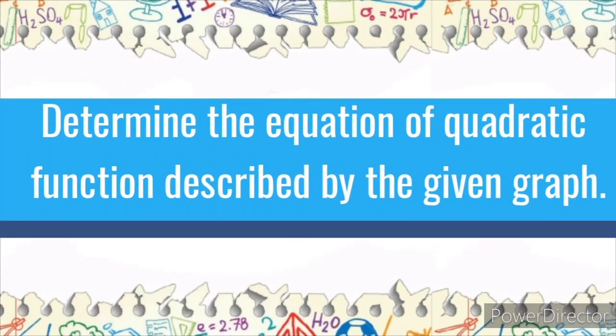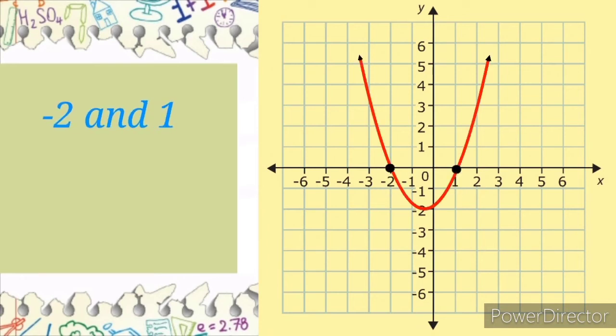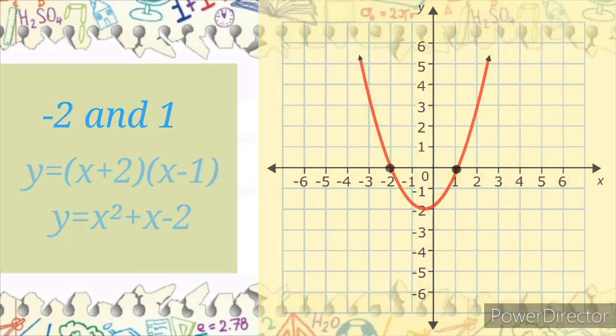Determine the equation of a quadratic function described by the given graph. From the given graph, we can see that the zeros are negative 2 and 1. So y is equal to x plus 2 times x minus 1, which gives y is equal to x squared plus x minus 2.